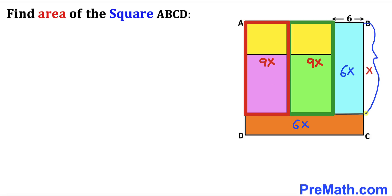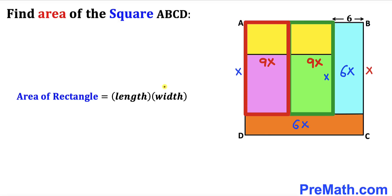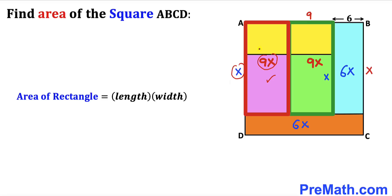We know this side length is x centimeters, so the adjacent sides are also x centimeters. Using the area formula again — area equals length times width — for this rectangle the area is 9x and the length is x, so the width must be 9 centimeters. Likewise, for the next rectangle the area is 9x and the length is x, so that side length is also 9 centimeters.